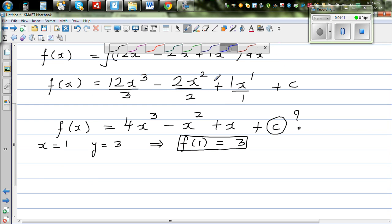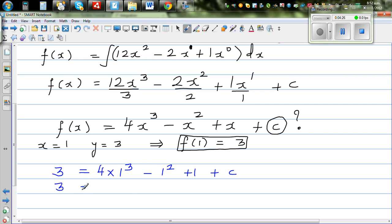So let me change color. So we can say 3 = 4 times 1³, which is 4, minus 1² + 1 + c. So minus 1 and plus 1 gets cancelled. So 3 = 4 + c, which implies c = -1.